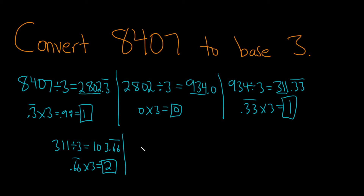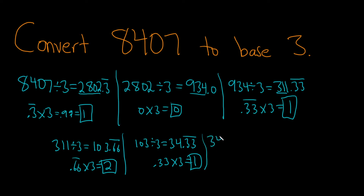Then you do it again. 103.33 divided by 3 — I got 34.33 repeating. So you do 0.33 times 3, which is 1. Then do it again: 34 divided by 3 is 11.33. So 0.33 times 3 is 1.